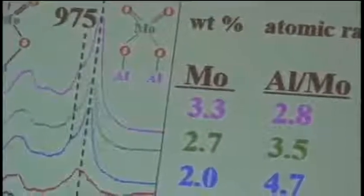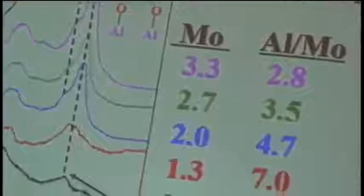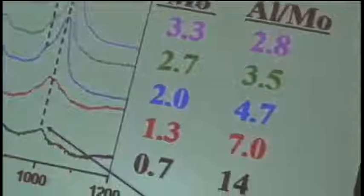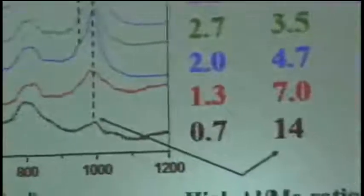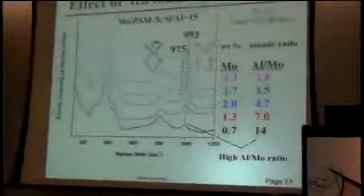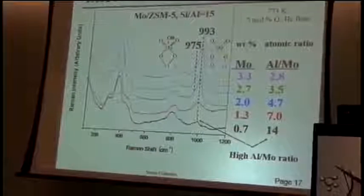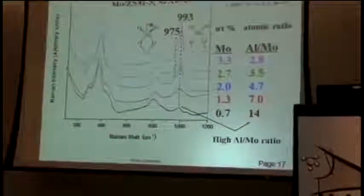These two Raman bands cannot be from the same species because the ratio of these bands change as we change the molybdenum concentration. So we do have the confirmation that we have two distinctly different molybdenum species.